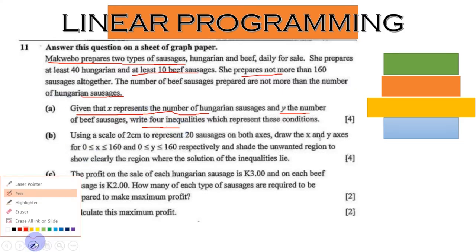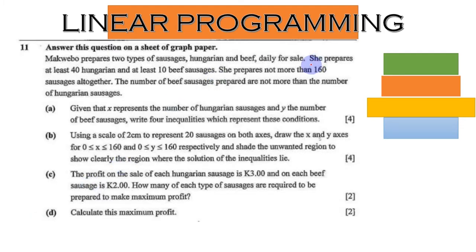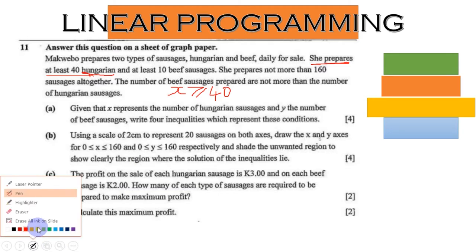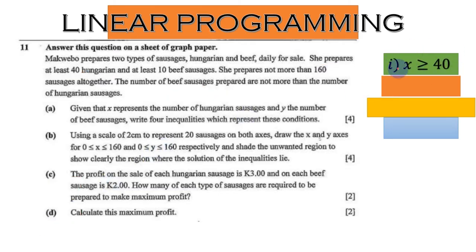Since we know x is for Hungarian and y is for beef sausage, our first inequality comes from the condition: she prepares at least 40 Hungarian sausages. 'At least' means that particular number or above, so the sign used is greater than or equal to. Hungarian is represented by x, so our first inequality is x ≥ 40.